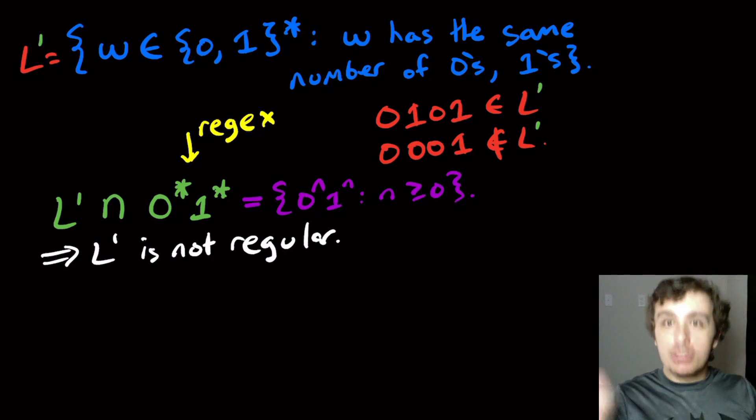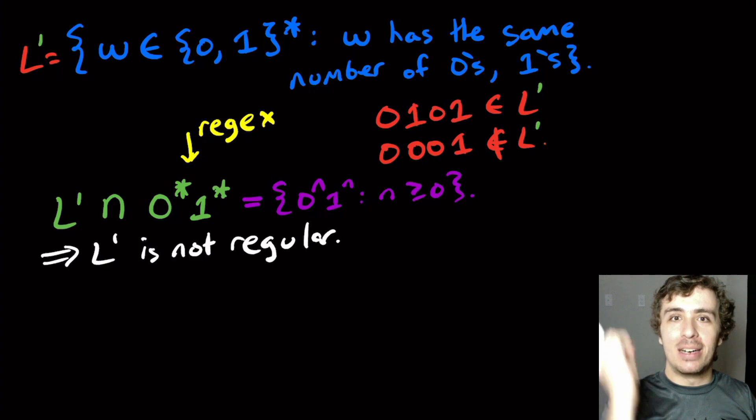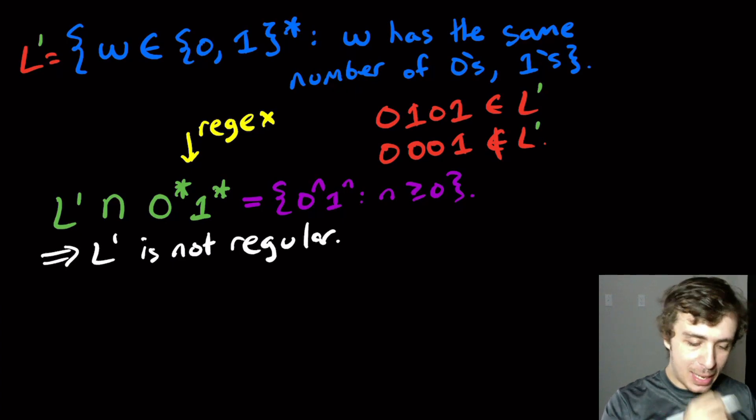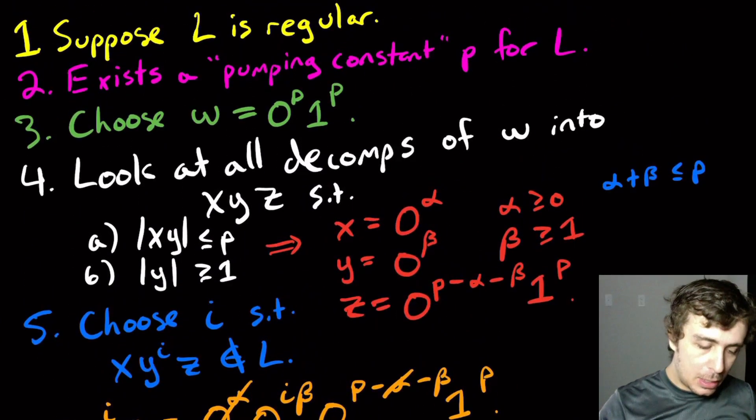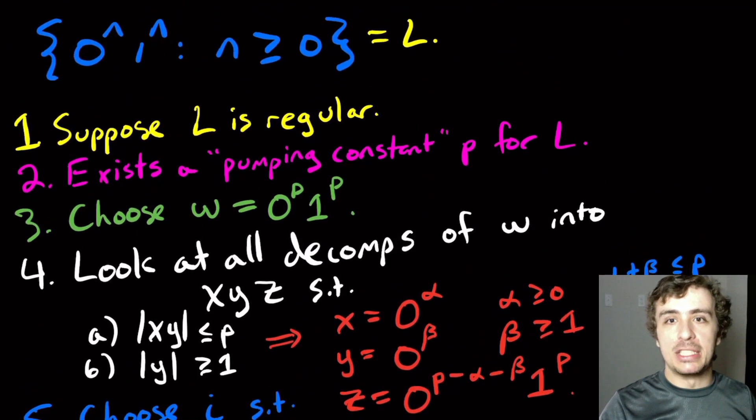But suppose that we wanted to prove this straightforward without any closure properties whatsoever. Well, the thing that we can do is use the proof of 0^n 1^n not being regular verbatim, except changing L for L'. Because why? In fact, I have the proof right here. So we have, we've shown before that 0^n 1^n is not regular.